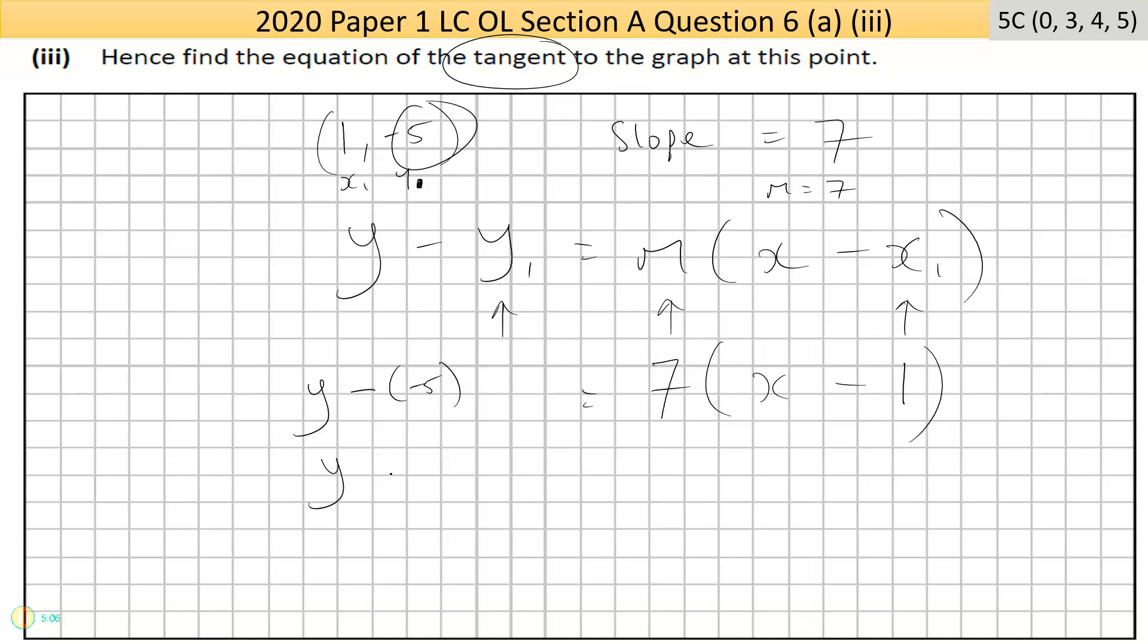Minus by minus is a plus. Then multiply the 7 in: 7 × x is 7x, 7 × -1 is -7. The way the SEC wanted it, they want everything on one side with x being positive.